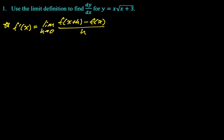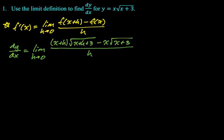So I'm going to start off by writing that down. So dy/dx is the limit as h approaches 0. So I have to do the function of x plus h. So that's going to be every x gets replaced with x plus h. So it'll be x plus h radical x plus h plus 3 minus the original function, which is x root x plus 3, all divided by h.